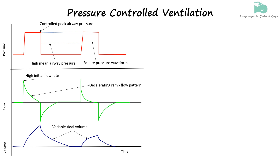In a pressure-controlled mode of ventilation, the inspiratory pressure is the control variable and is maintained during the inspiratory phase. As a result, the pressure waveform is square, which increases the mean airway pressure. During the early inspiratory phase, the ventilator provides a high inspiratory flow rate to rapidly achieve the pressure limit. In order to maintain this pressure, the flow rate needs to decrease over the course of inspiration, generally taking the shape of a down-sloping ramp. The tidal volume fluctuates depending upon the lung compliance.